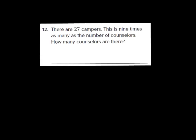Let's look at number 12. It says there are 27 campers. This is nine times as many as the number of counselors. How many counselors are there? We know that 27 equals nine times the number of counselors — we don't know that number yet. All I have to do is think: nine times something is 27. You know your multiplication facts, and you know that three times nine is 27. So three is our answer that goes in the blank — that's how many counselors there are.